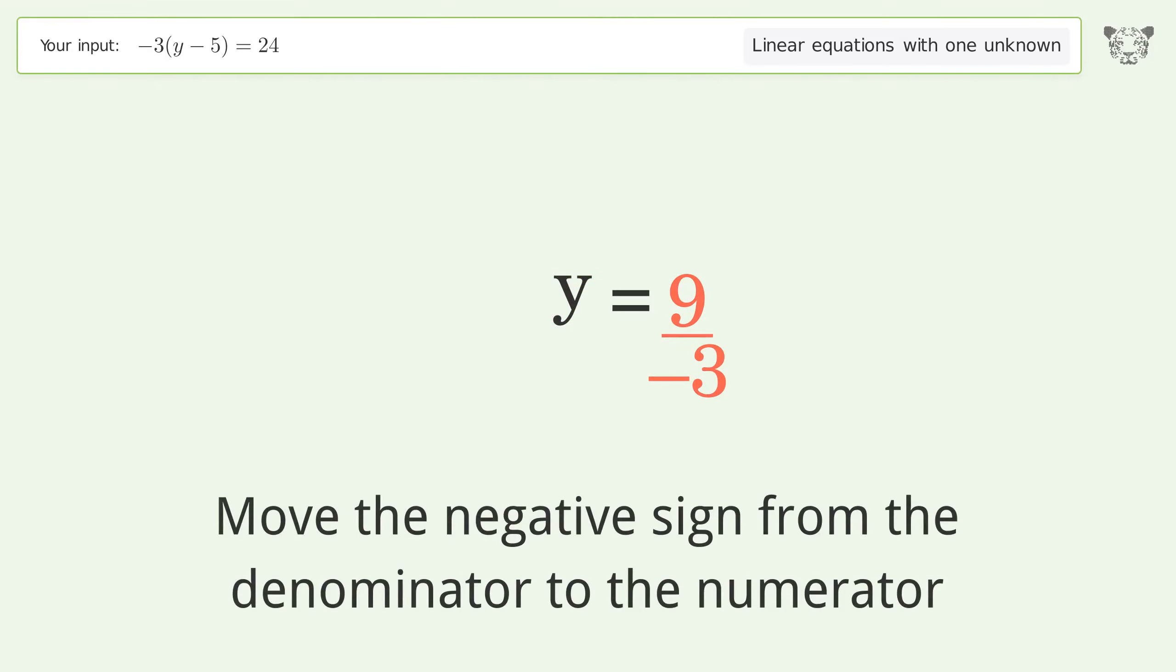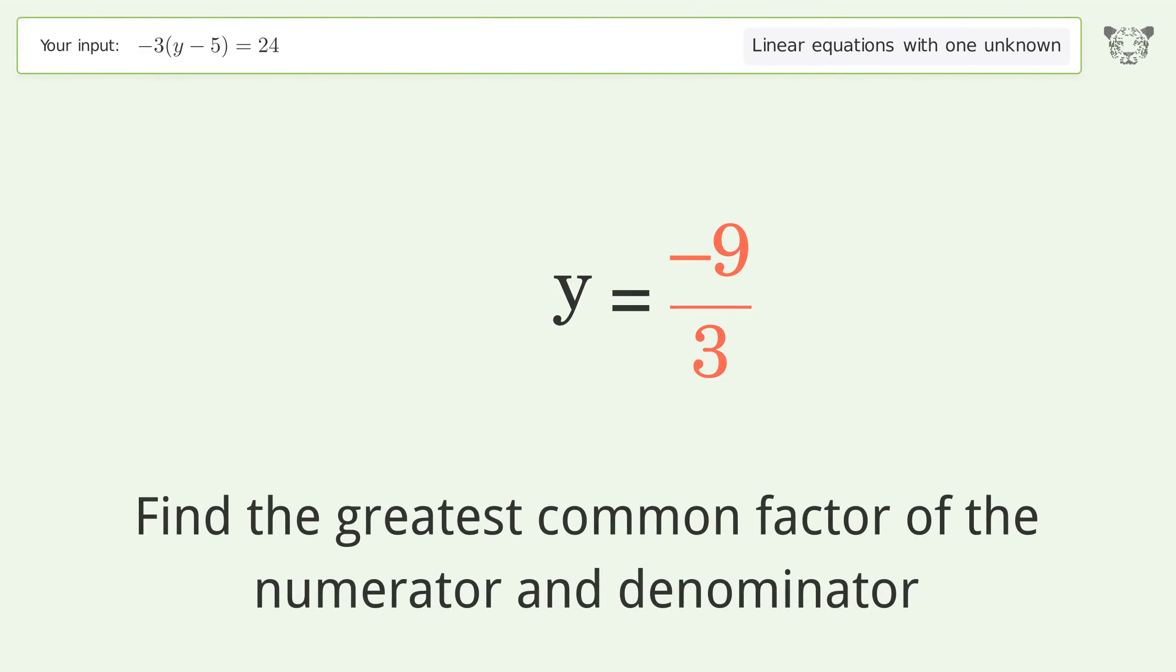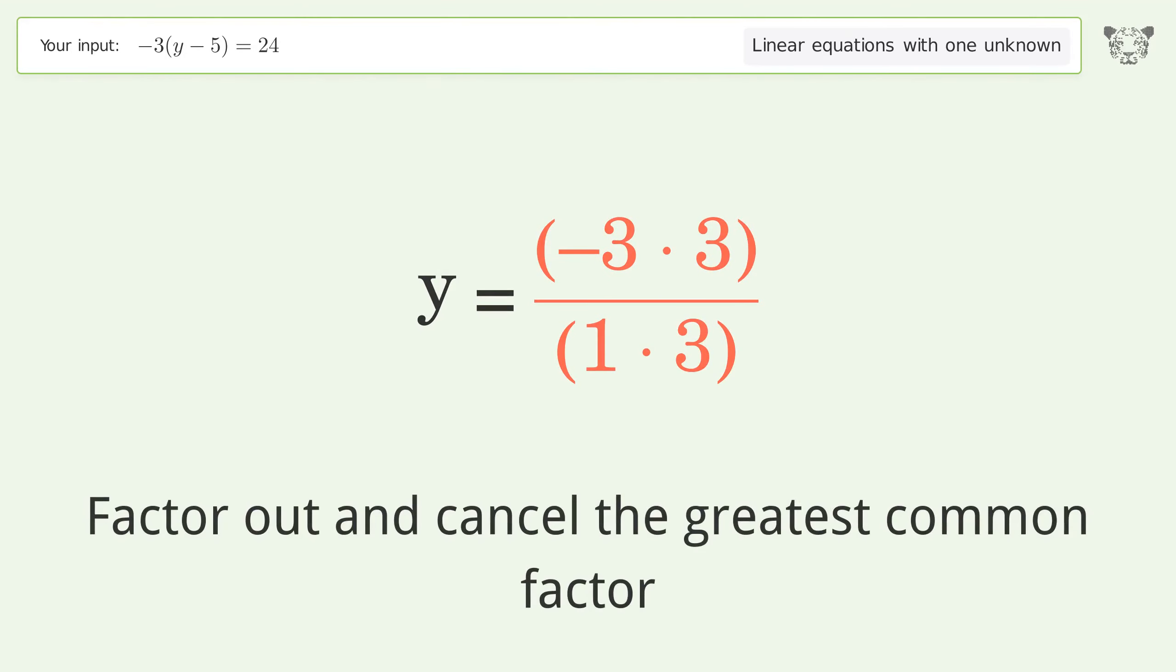Move the negative sign from the denominator to the numerator. Find the greatest common factor of the numerator and denominator. Factor out and cancel the greatest common factor.